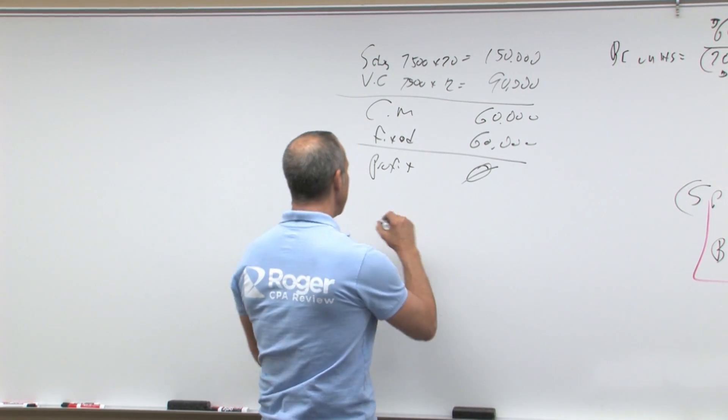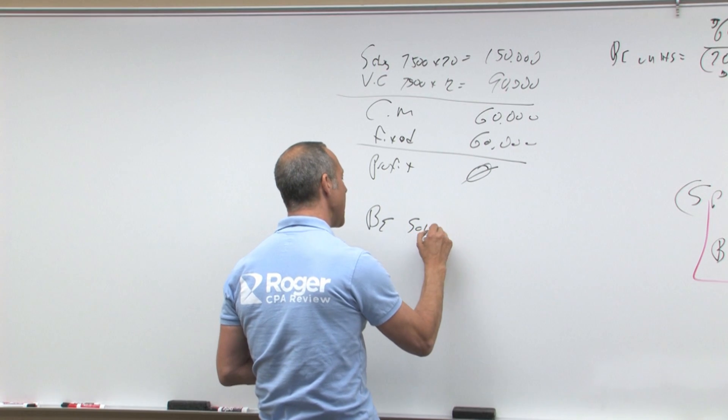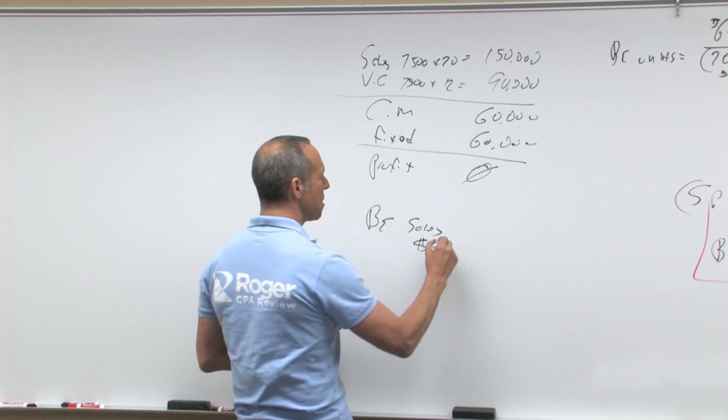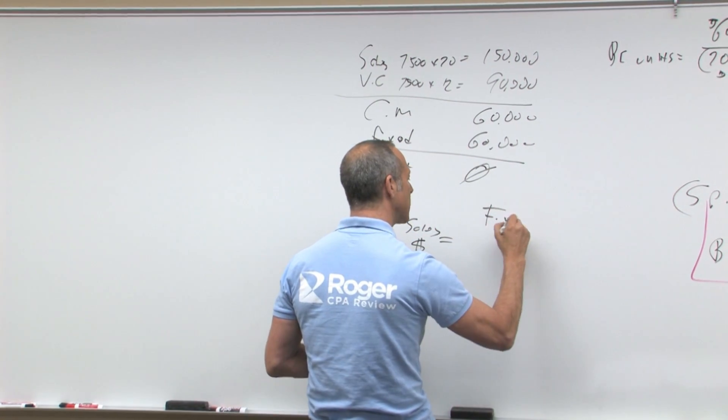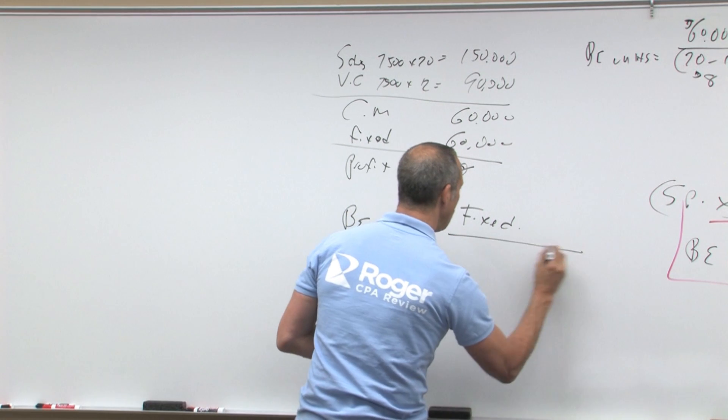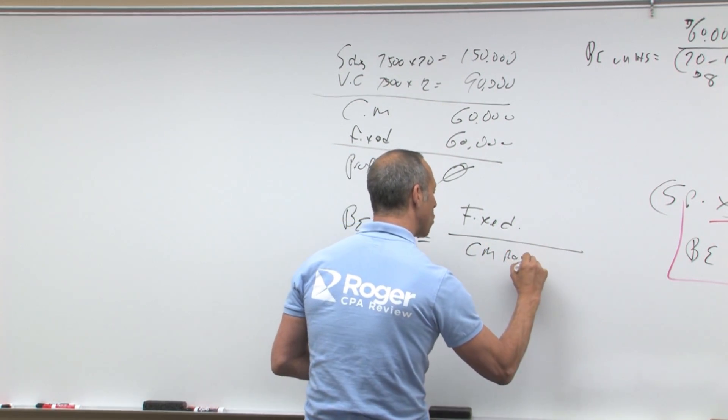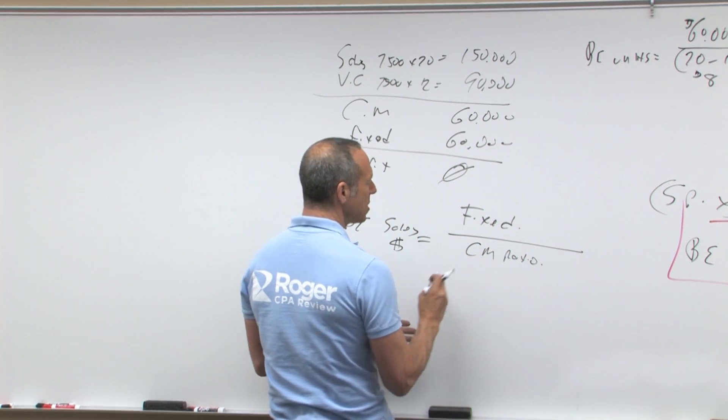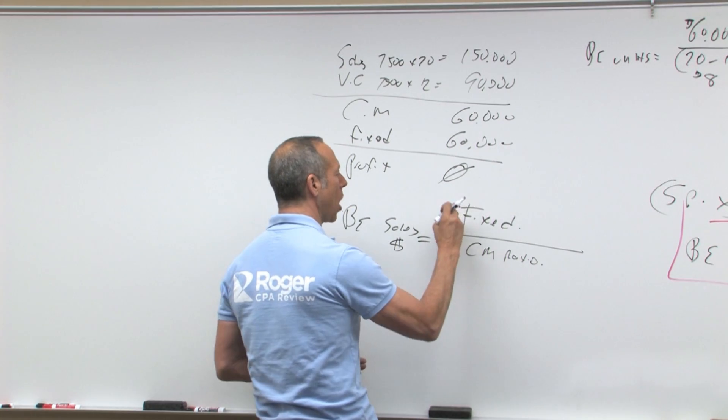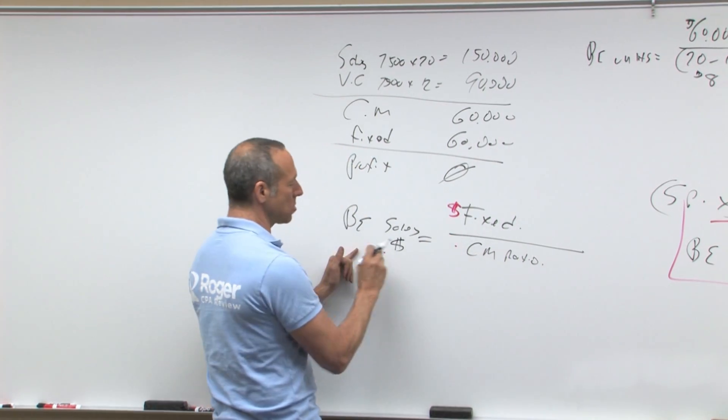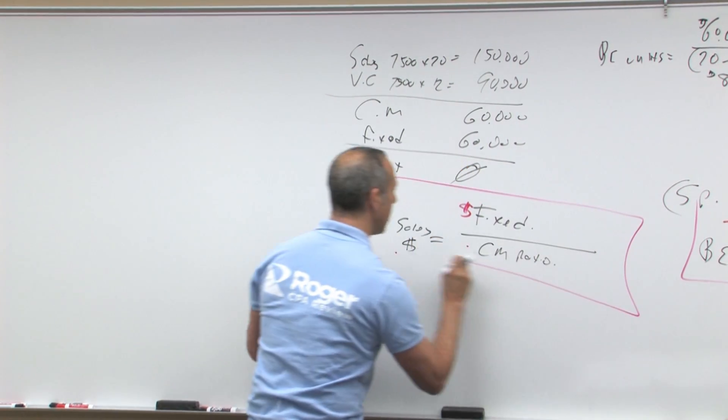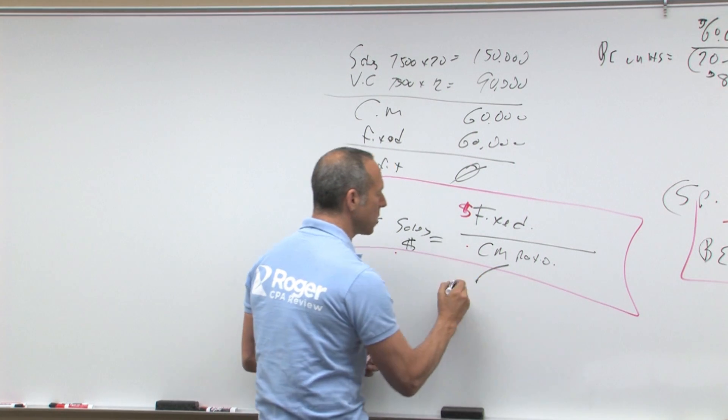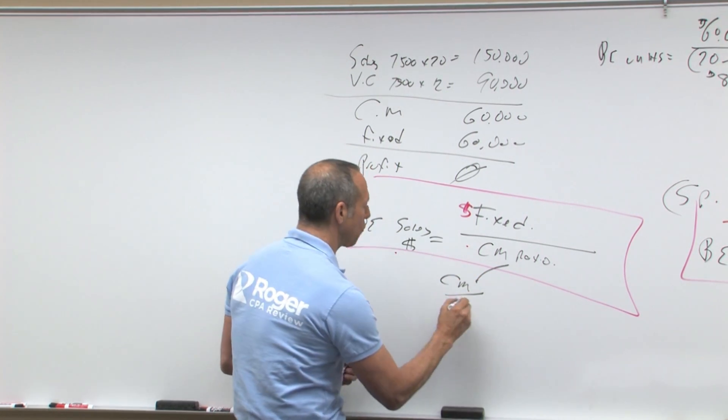Another very important formula is breakeven in sales dollars. That equals your fixed costs over your CM ratio. Now what is a CM ratio? This is dollars over non-dollars is dollars. So what is a CM ratio?